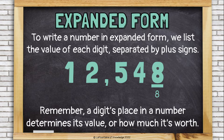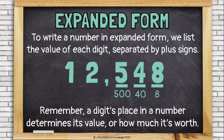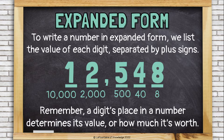The 4 is not worth 4 — it's actually 4 groups of 10, because it's in the 10's place, so it's worth 40. The 5 in the 100's place is worth 500. The 2 in the 1,000's place is worth 2,000.